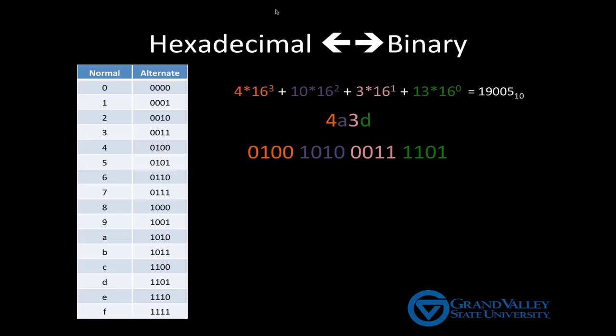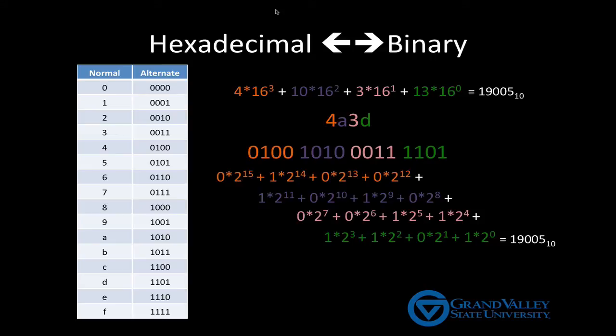When we expand 4A3D as a hexadecimal number, we see that it's equal to 19,005 base 10. When we treat the alternate version as a binary number, we also see that it's equal to 19,005. Is this a coincidence? No, of course not.